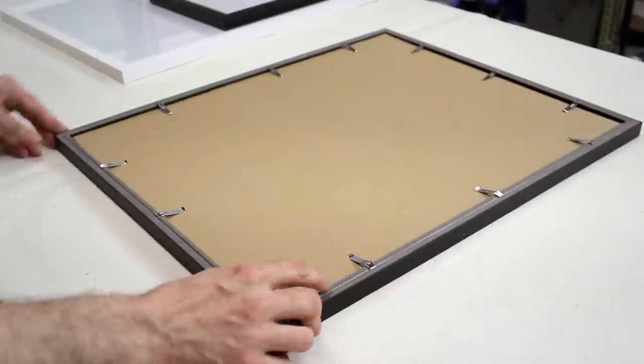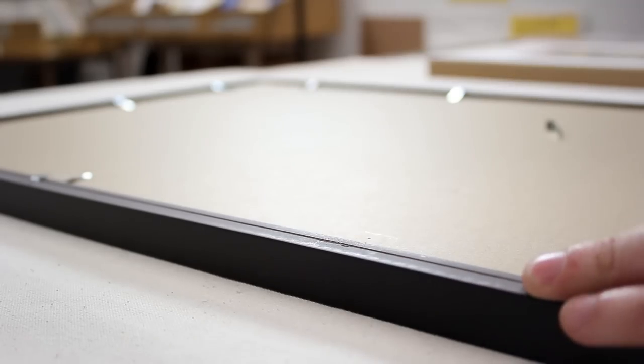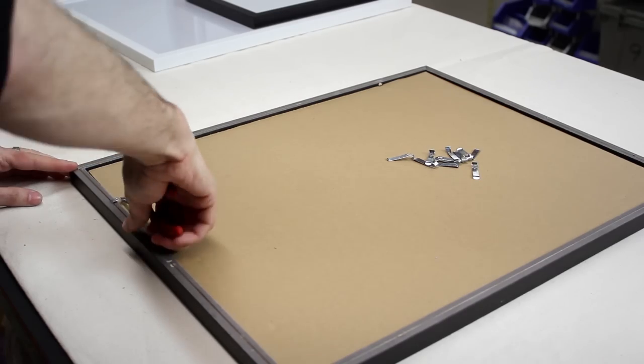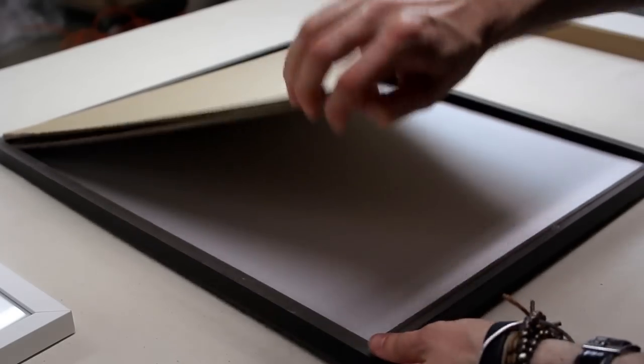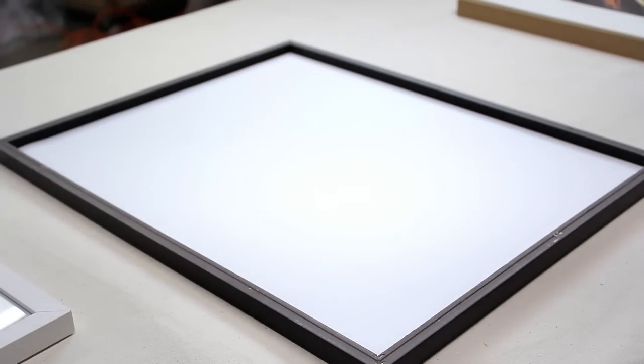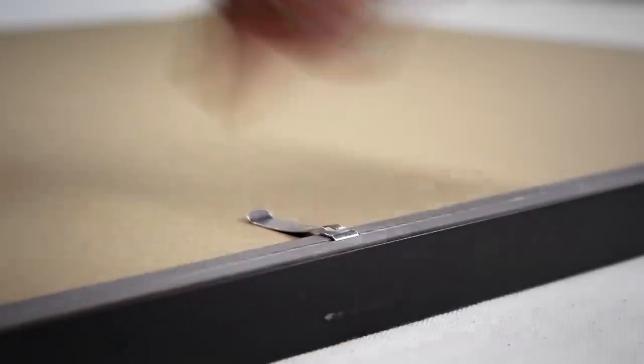To assemble the Baud frame it's as simple as using a pair of pliers or your hand to remove the easy clips. The easy clips are called easy clips because they're simply that, they're easy to remove. Take out the backing and the acid-free barrier paper, put your artwork inside, make your frame sandwich, and then place the easy clips back in.